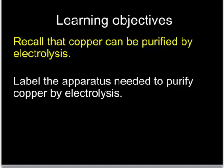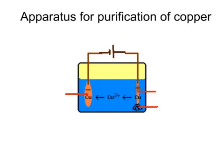You need to be able to label the apparatus needed to purify copper by electrolysis. This diagram, taken from BBC Bitesize, shows the apparatus for the purification of copper by electrolysis. At the top we have the cell or battery — it might be called a power supply — and it has a positive and a negative end.